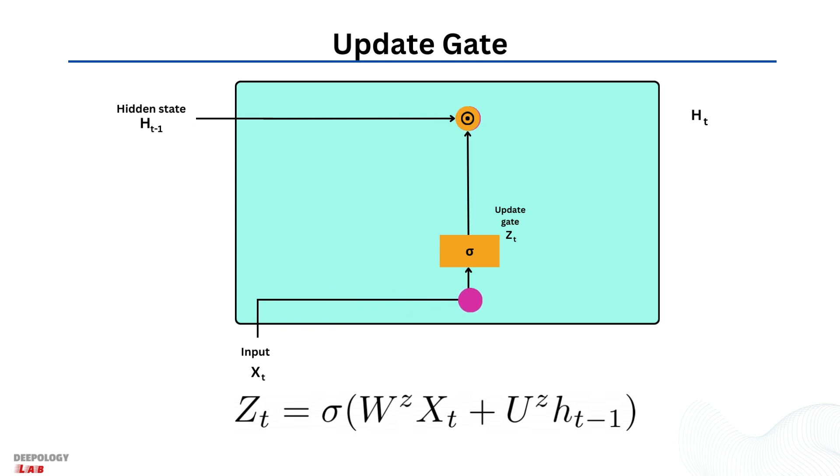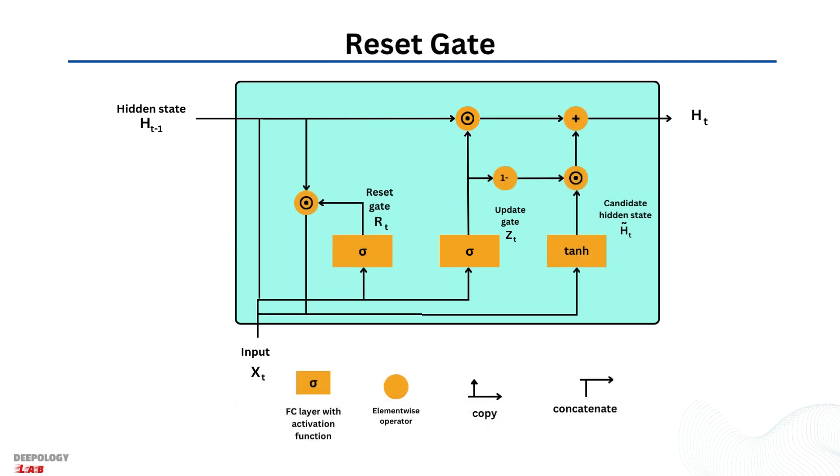The input to the update gate is the hidden layer at the previous time step and the current input, both have their weights associated with them which are learned during the training process. Finally, results are added together and a sigmoid activation function is applied to squash the result between 0 and 1.